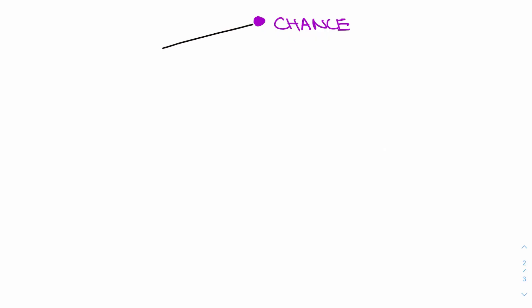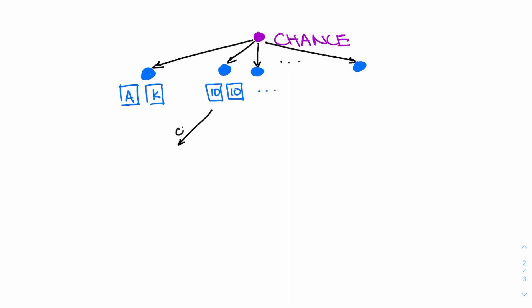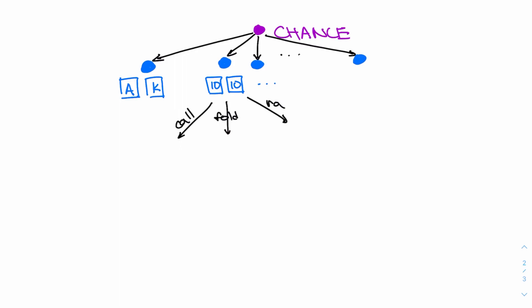In order to show how to actually calculate this regret, let's turn the game of poker into a tree. At the very top, we have a node that represents chance — because when you get dealt cards, that's just up to luck. Every single branch of that node represents one possible action that results from this chance player. Each of these card states represents another node in the tree. From there, you can either call, fold, or raise — so these are more actions we can create as branches from an individual node.